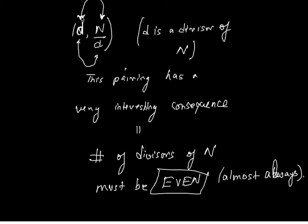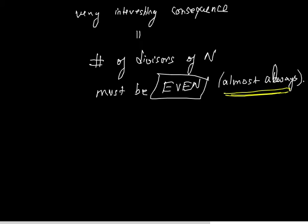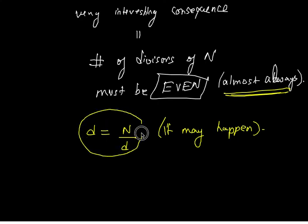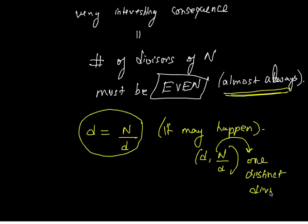And now let's come to the most important and intriguing part, the 'almost always' part. Why do I say this over and over again? The reason is this: that it might so happen that d is equal to n over d. Up to now, we were assuming that d and n over d are different, but for some numbers, it's possible that d is equal to n over d, which means for that particular pair, we are actually getting one distinct divisor.